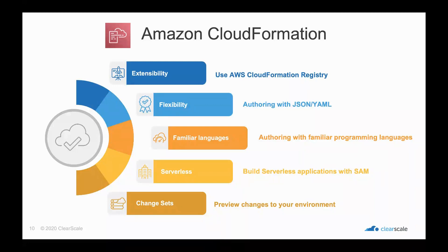CloudFormation is extensible. It has the AWS CloudFormation Registry, with which you can model and provision third-party application resources alongside AWS resources. Examples of third-party resources are monitoring, team productivity, incident management, and version control tools. To interact with CloudFormation, you can write JSON and YAML files — we'll see a little bit of that in the next slide.